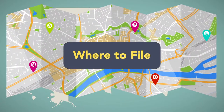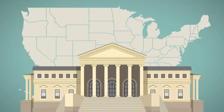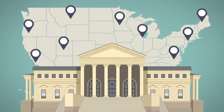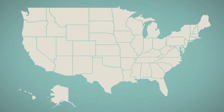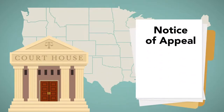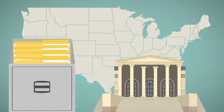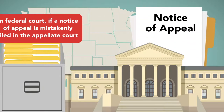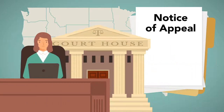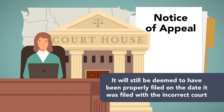Where to File. The appellate court in which an appeal will be heard depends foremost upon where the case originated. Most cases must be appealed to the court directly above the court where the disputed ruling occurred. Before the appeal can be heard, the appeals process must be initiated by the filing of a notice of appeal with the court that issued the ruling being appealed, and the records are then forwarded to the appellate court. In federal court, if a notice of appeal is mistakenly filed in the appellate court, the clerk of that court can forward it to the trial court, and it will still be deemed to have been properly filed on the date it was filed with the incorrect court.